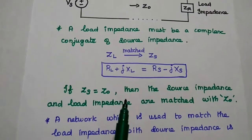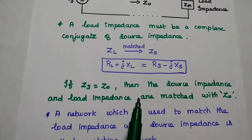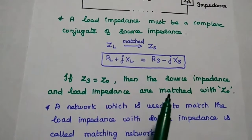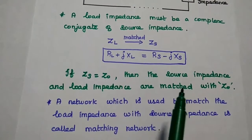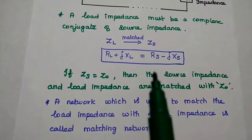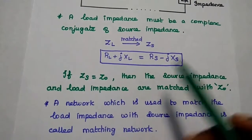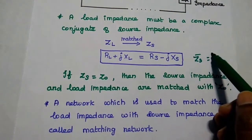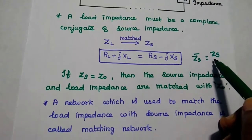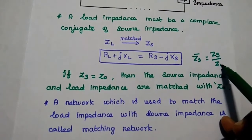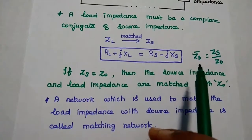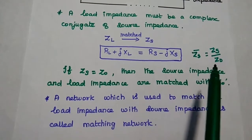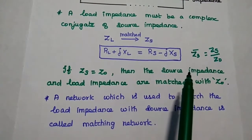If ZS is equal to Z0, then the source impedance and load impedance are both matched with the characteristic impedance. If these two are not matched, we can use the normalized value of the source impedance, which equals the source impedance divided by the characteristic impedance. Normalization means the impedance is divided by the characteristic impedance of the line.